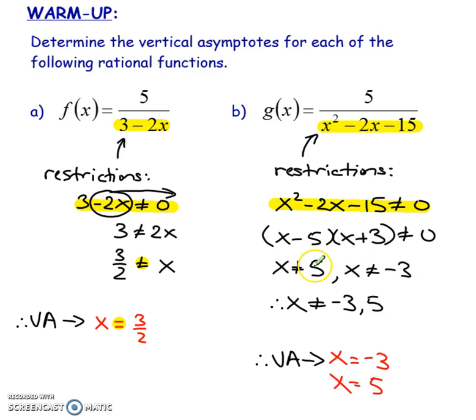So you have to factor and then solve for your values of x. If x is 5, it's going to give me a 0 on the bottom. Or if x is negative 3, you're actually going to get the 0 again. So in this case, we have 2 restrictions, which means that we have 2 vertical asymptotes.